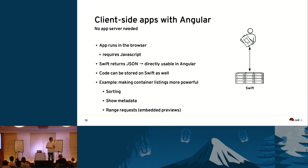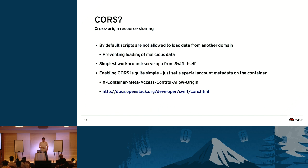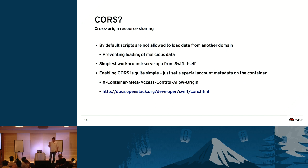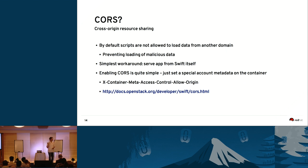For example, a picture in RAW format from a camera typically has a small embedded JPEG you could read. One thing to address is Cross-Origin Resource Sharing: scripts running in your browser are normally not allowed to access data from a different domain. A simple workaround is to upload your Angular app to a public container on Swift so everything runs on the same domain. But in the long run you'll likely run your app from one server and Swift on another — fortunately, you just set a special metadata on the container to enable cross-domain access.